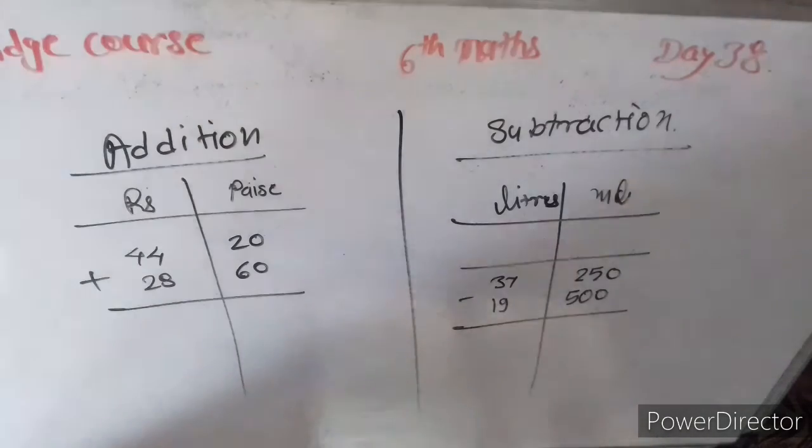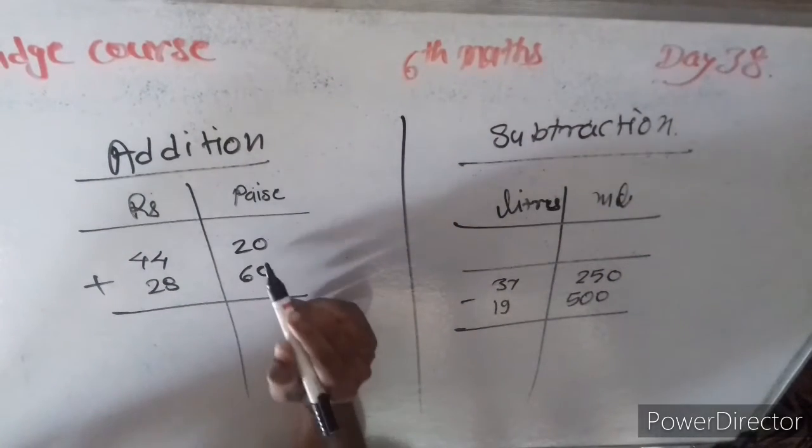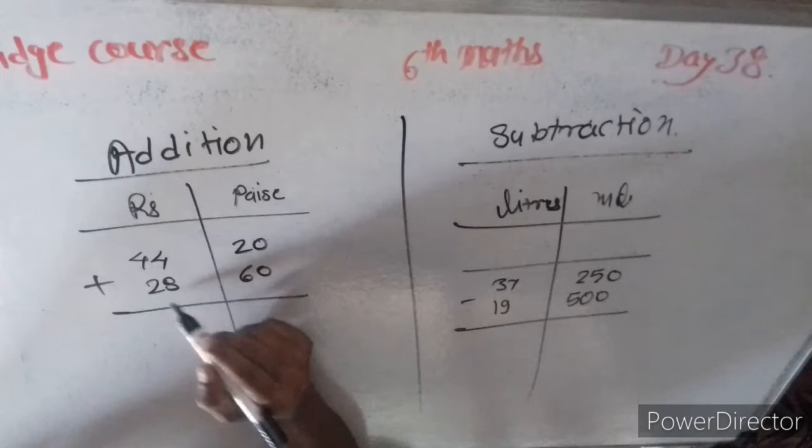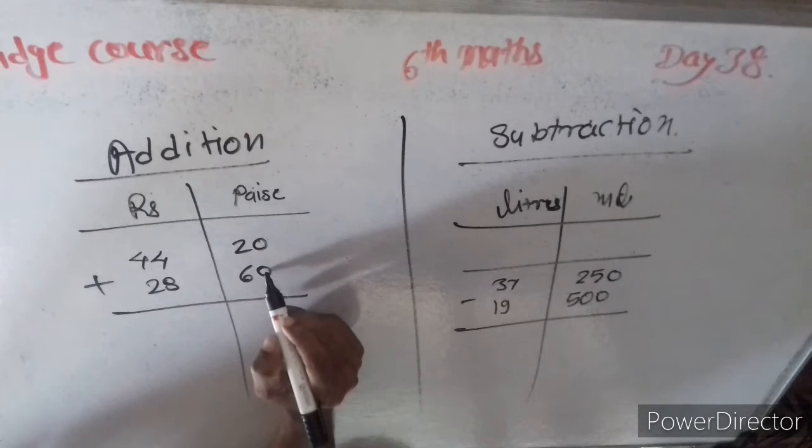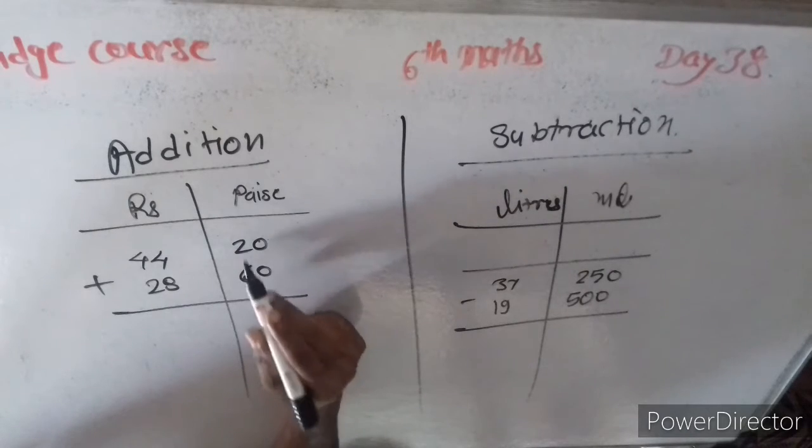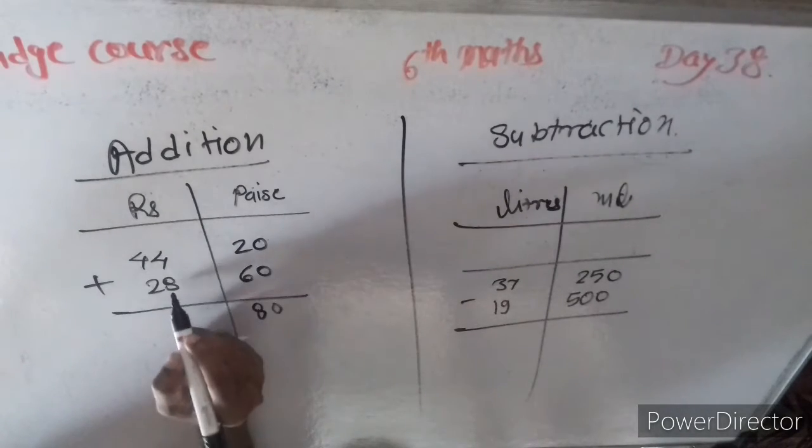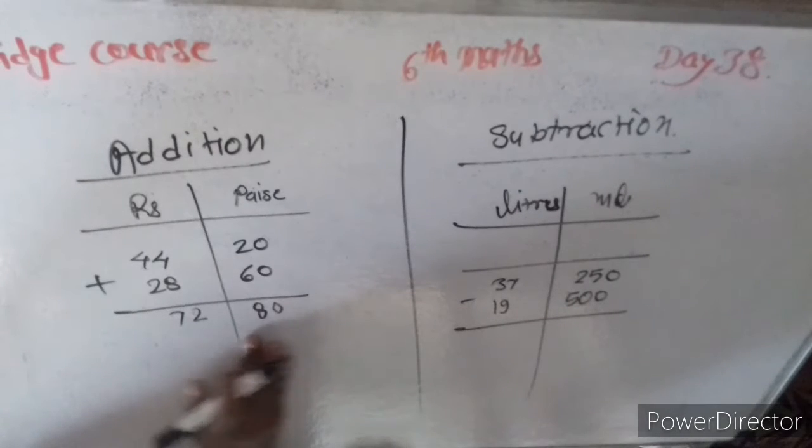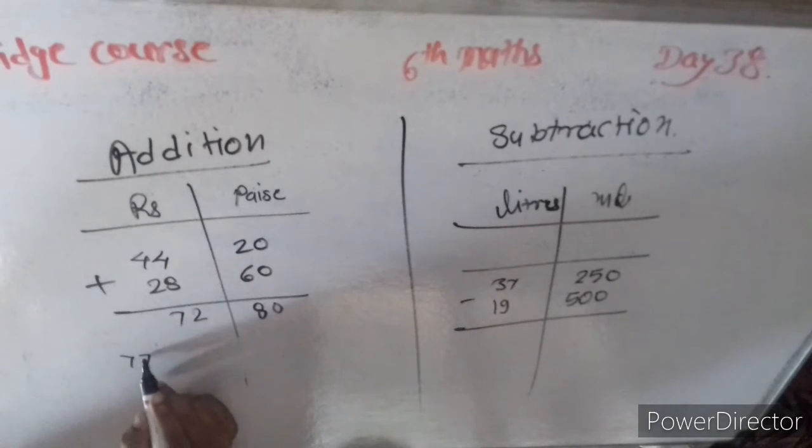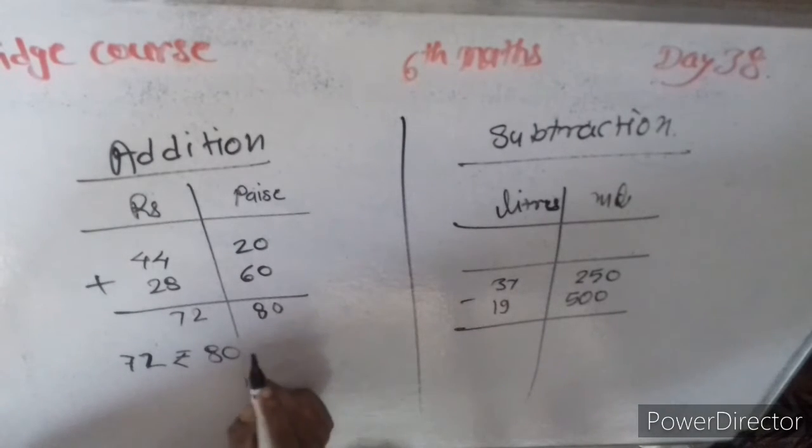So start now, look here. 44 rupees and 20 paise, 28 rupees and 60 paise. Now addition: 0, 6 and 8, 80 paise. 8 and 4, 12, carry 1. 72 rupees and 80 paise. Okay.